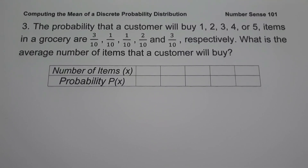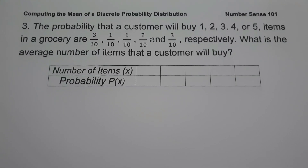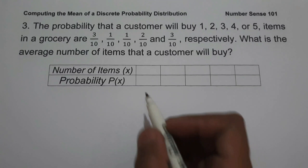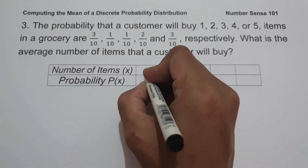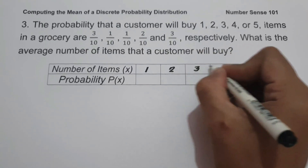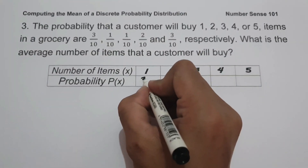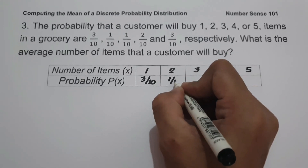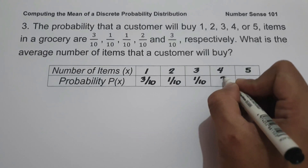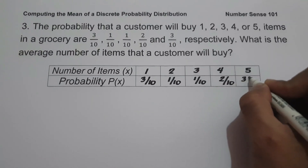On example number 3: The probability that a customer will buy 1, 2, 3, 4, or 5 items in a grocery are 3/10, 1/10, 1/10, 2/10, and 3/10 respectively. What is the average number of items that a customer will buy? We write the number of items as 1, 2, 3, 4, and 5, with corresponding probabilities 3/10, 1/10, 1/10, 2/10, and 3/10.